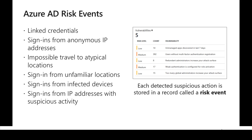If the client is logging in from one location, say the US, and within a short time is trying to access the network from a different location like Singapore or London, it is certainly impossible to travel to such locations in that time. It will raise an alert flagging this as impossible travel from a new location, which may indicate an identity attack.